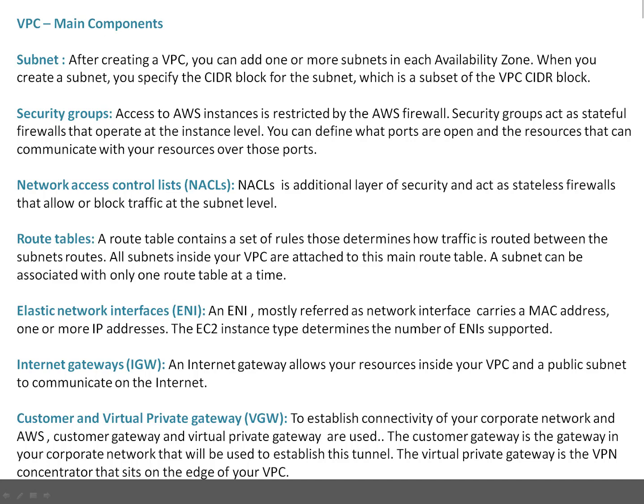Elastic Network Interfaces, or ENIs, are mostly referred to as network interfaces. They carry MAC addresses and can have one or more IP addresses. You can assign one or more public IPs, or one or more private IPs. The number of ENIs you can attach to a single instance depends on the instance type — specifically what the maximum number of supported ENIs is for that instance type.